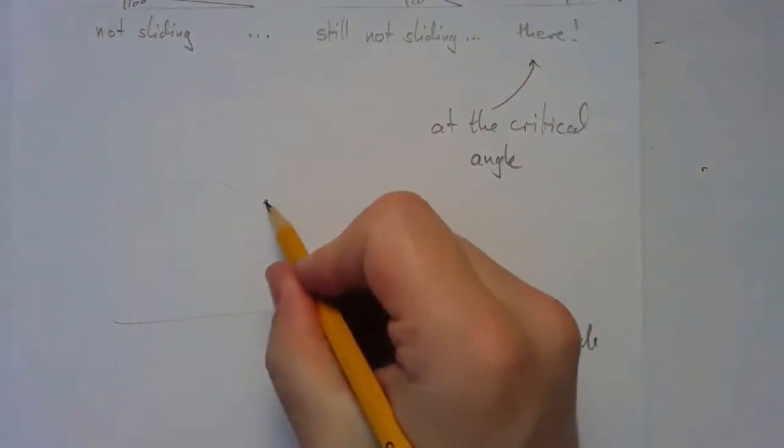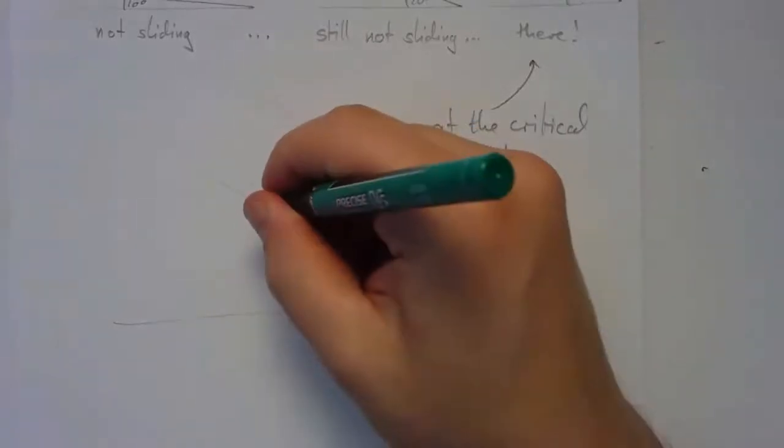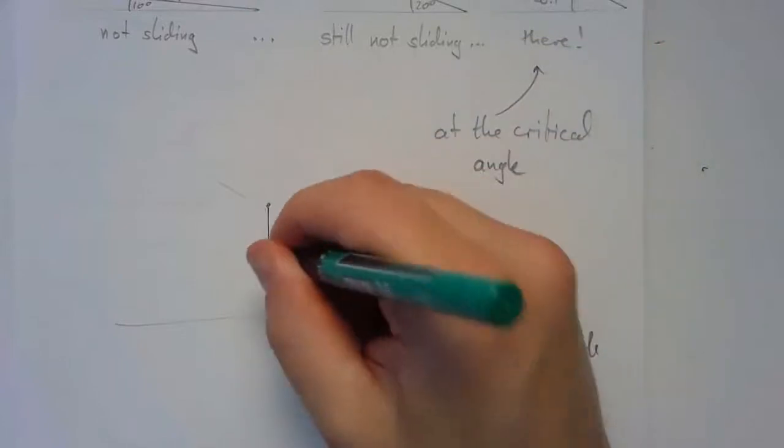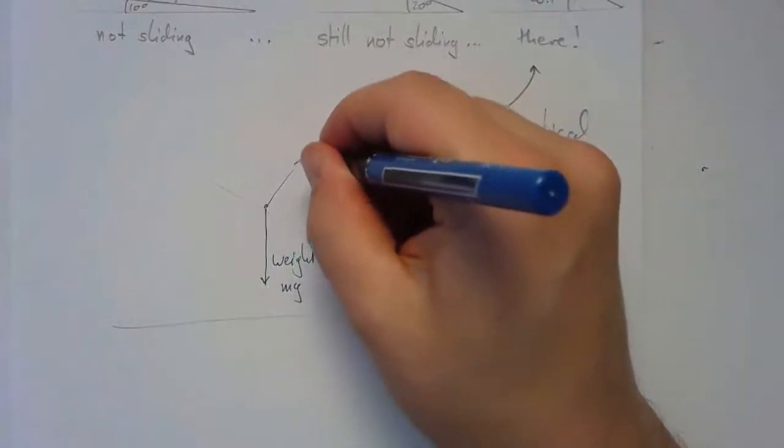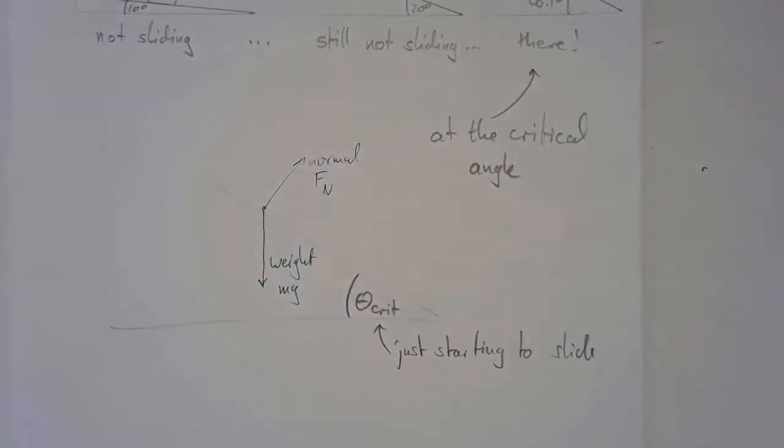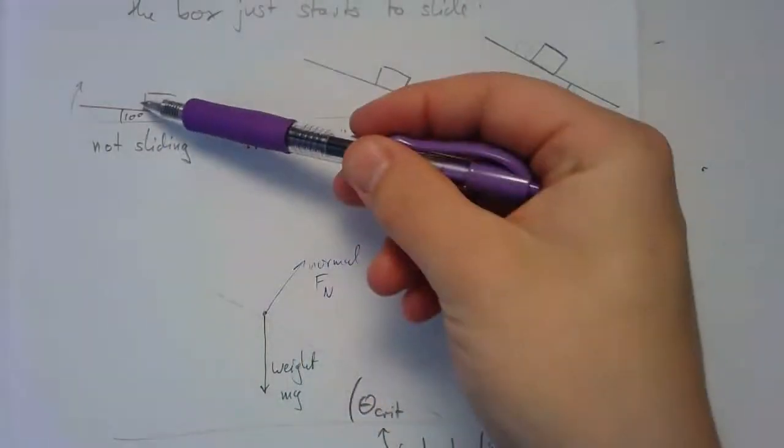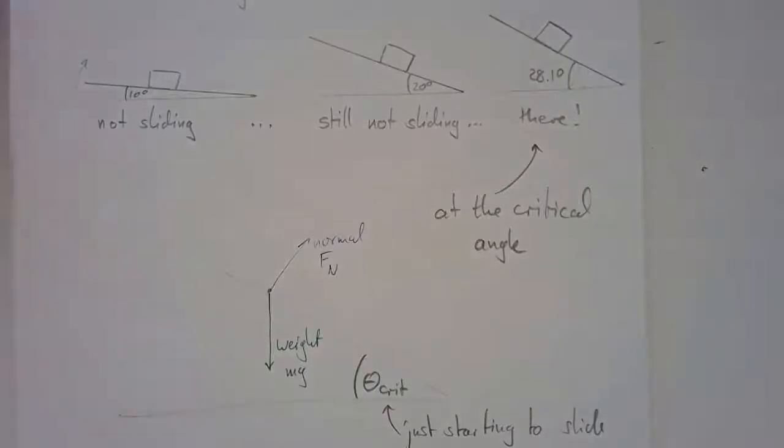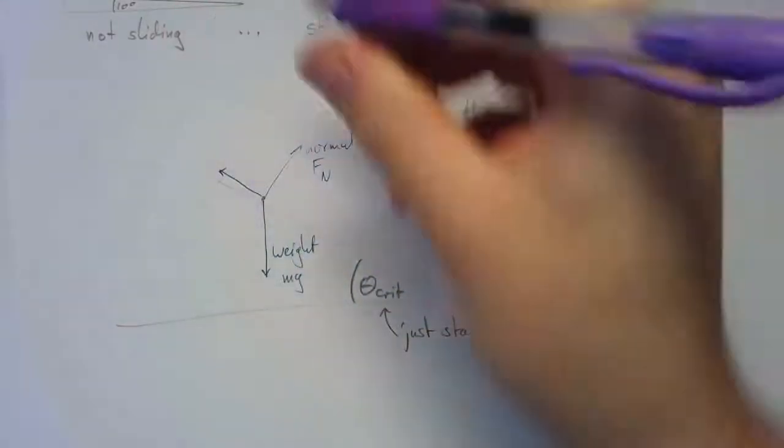We're not going to assume it is 28.1. It was just an example. We're just going to call it theta max. We're going to work algebraically. So, let's just sketch it like this. And so, we're here, and we're going to assume this is the critical angle, so it's just starting to slide. I'm going to draw my block. I'm just going to draw a dot here, because that's what I like to do. Let's draw the forces. There's always the weight. In fact, we know what the weight is. It's mg.